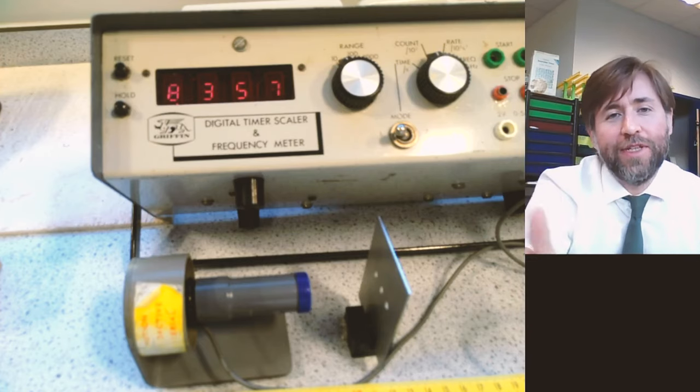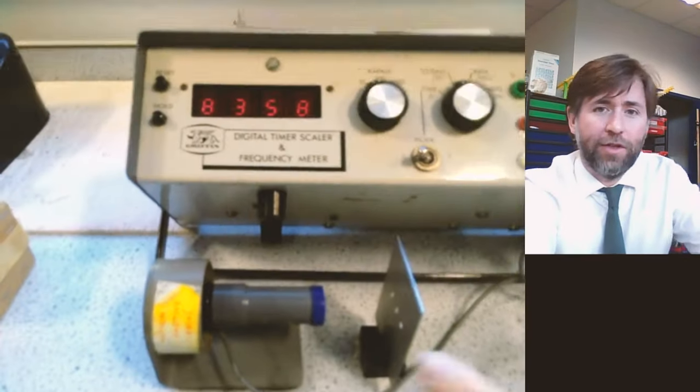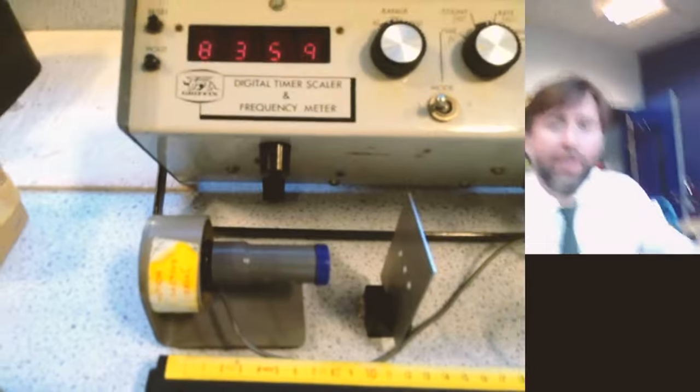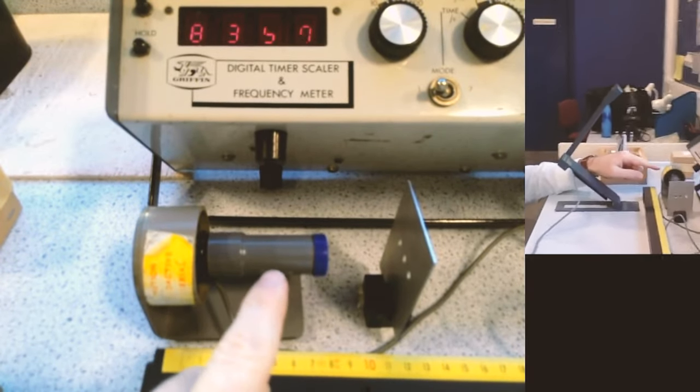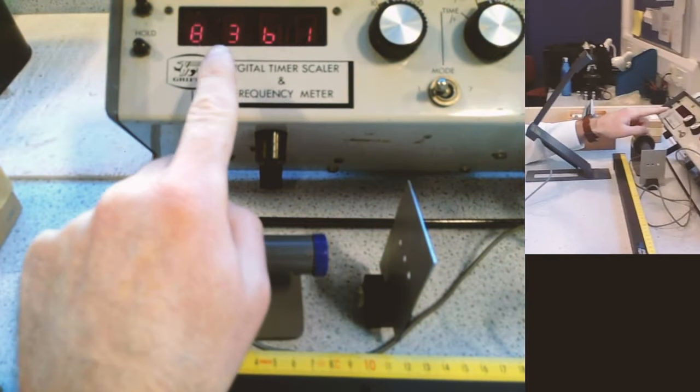So this is the classic alpha, beta and gamma demonstration. I've got a Geiger Müller tube set up just here and a scaler and timer just here.